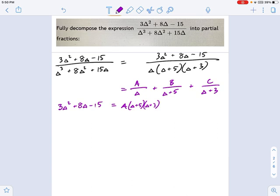In the middle, we get B times delta times delta plus 3. And on the right, we get C times delta and delta plus 5. That's the result of things cancelling out when you multiply both sides by all three factors.